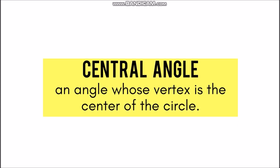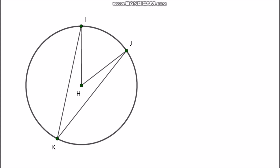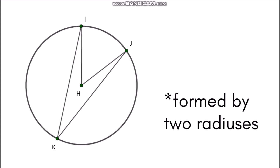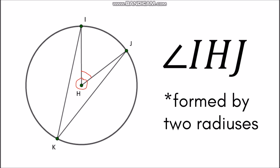We also have angles formed on a circle. First, we have the central angle. It is an angle whose vertex is the center of the circle. In finding a central angle, take note that it is formed by two radii. In this example, we have two radii: segment IH and segment JH. They meet at the center, which is point H. Point H serves as the vertex of angle IHJ, which is our central angle. It is called a central angle since the vertex is the center of the circle.